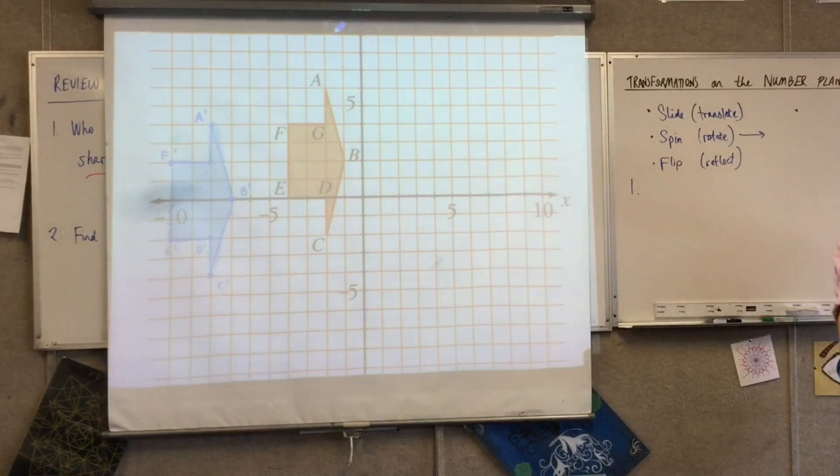Here's the rotation I want us to do. Rotate, you should write this down. Rotate the shape. It's called A, B, C, D, E, F, G.